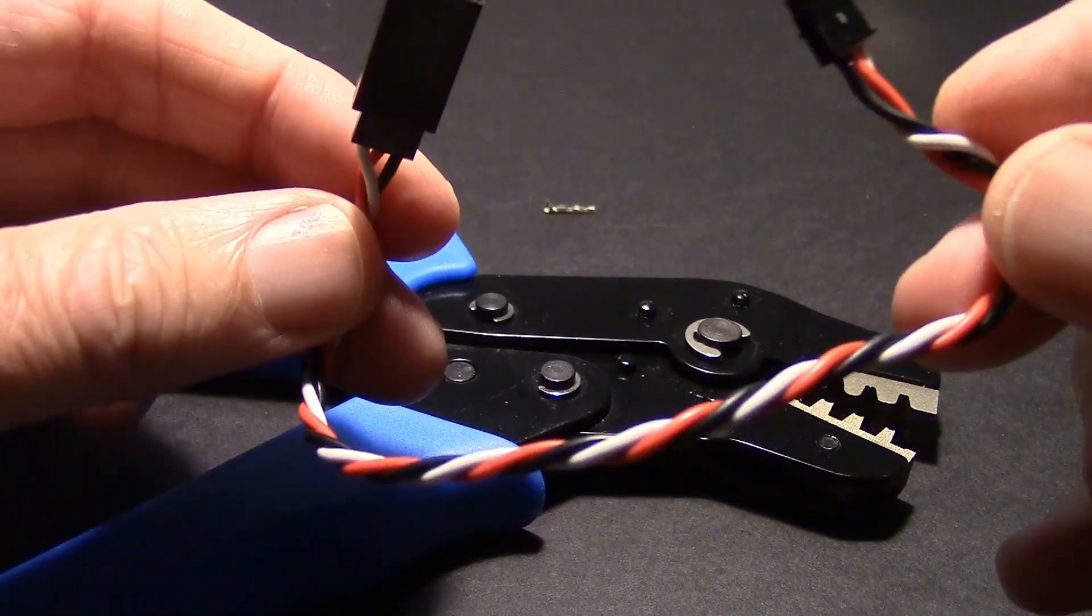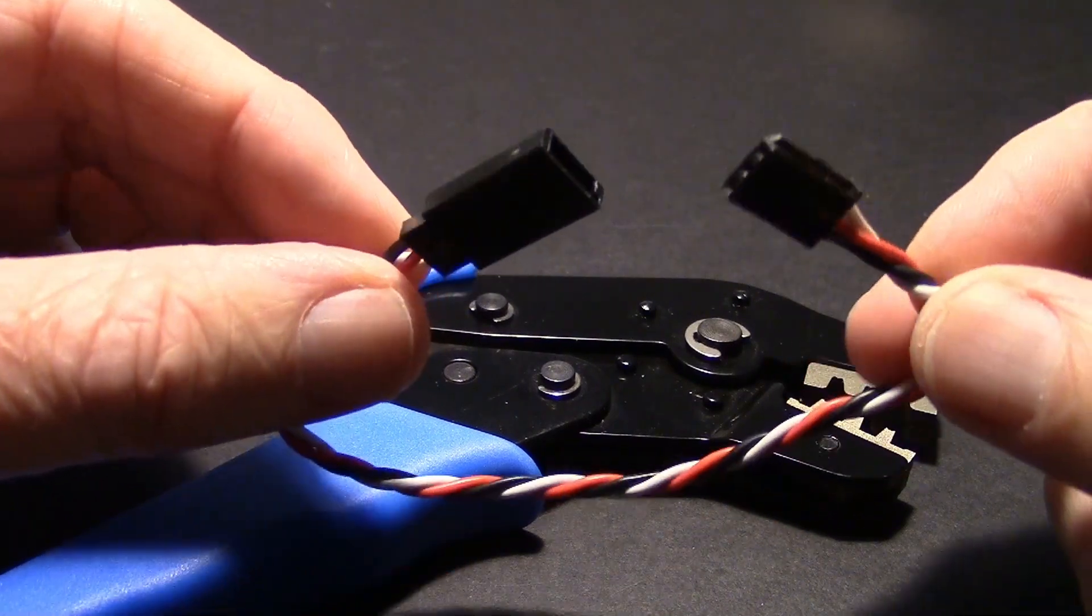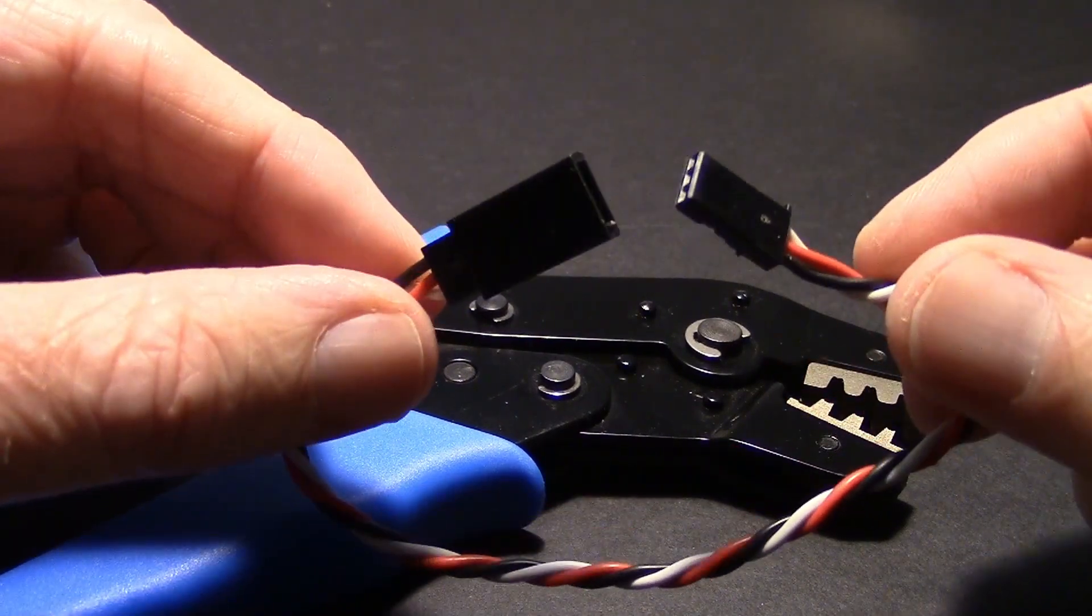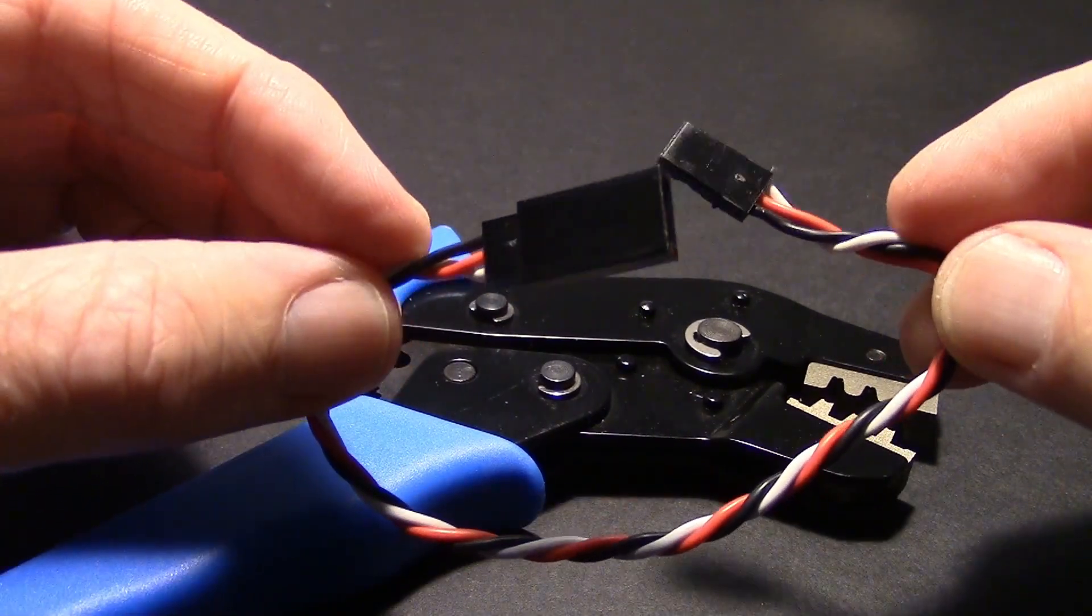So hopefully this video taught you how to get around those fumble fingers and is a good reminder if you forget how to use a crimping tool. So stay tuned for more tips and tricks from me, RC. And we'll see you next time.